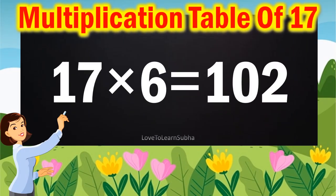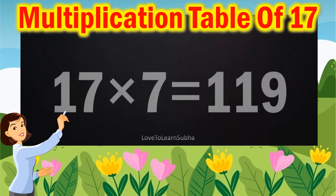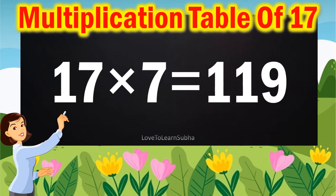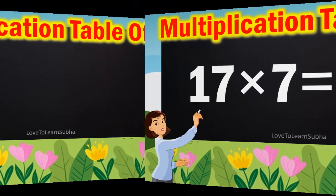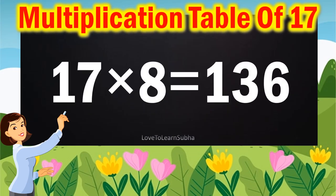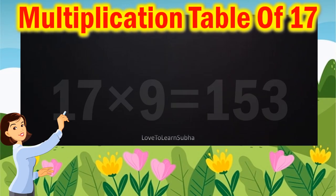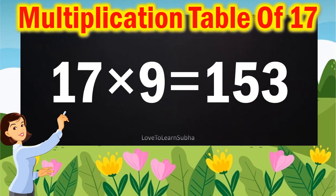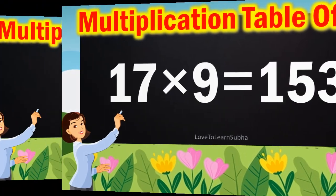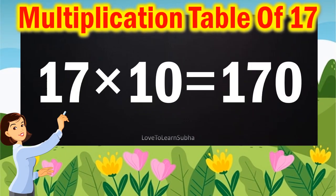17 6s are 102, 17 7s are 119, 17 8s are 136, 17 9s are 153, 17 10s are 170.